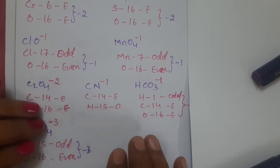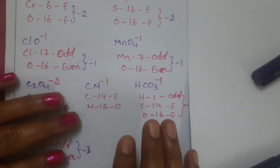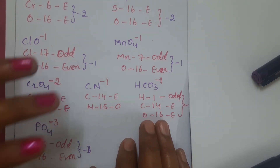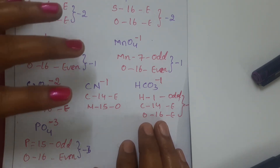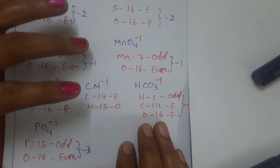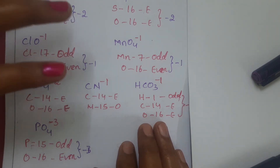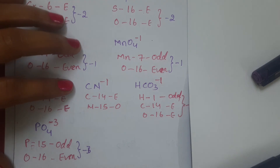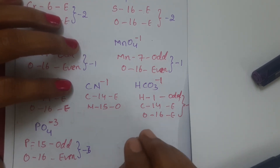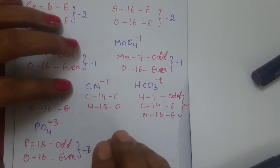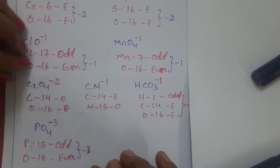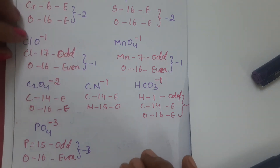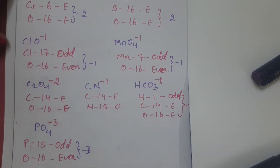We are not doing any calculations — just identifying the group numbers of the elements present in the polyatomic ion. I am sure within 10 seconds we can easily write the charge on any polyatomic ion. This is today's class, thank you.